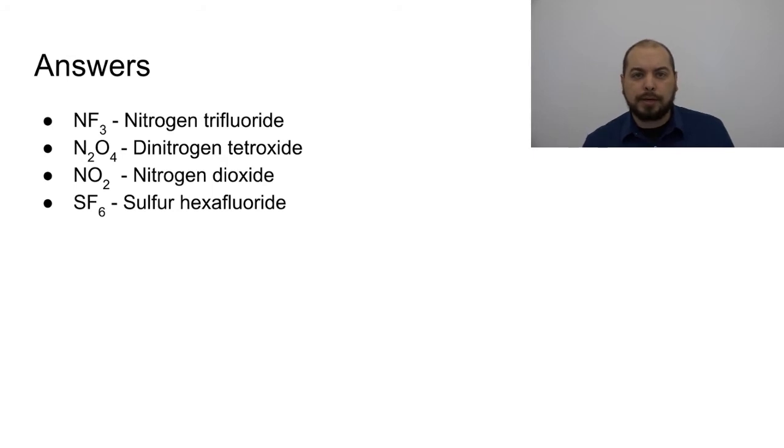The second compound here is N2O4. Here we do need a prefix on the first element, nitrogen, so it becomes dinitrogen. And there are four oxygens, so it becomes tetraoxide. So dinitrogen tetraoxide.